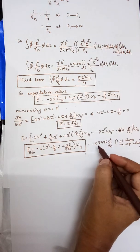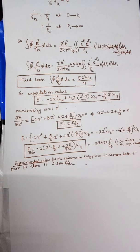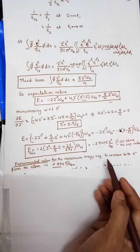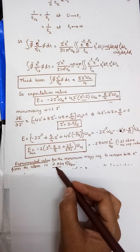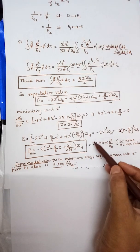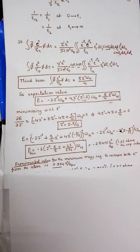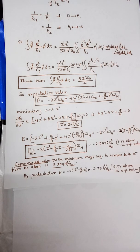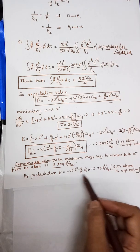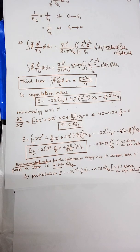By this method we obtain E = −2.8476 e²/a₀. The experimental value for the minimum energy required to remove both electrons from the atom is 2.904 e²/a₀. Our variational result is 1.9% above the experimental value, whereas perturbation theory gives −2.75 e²/a₀, which is 5.3% above experiment. This confirms that the variation method is more accurate than perturbation theory for the helium atom.